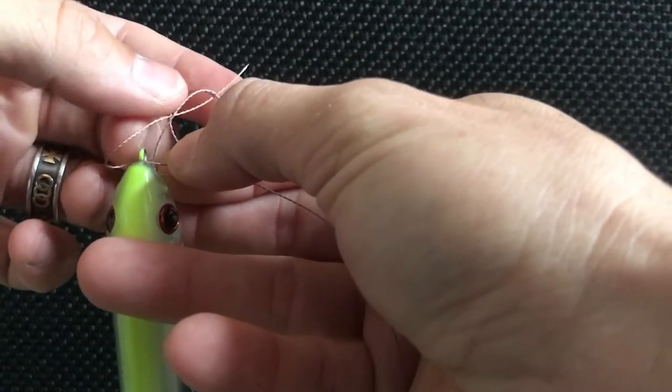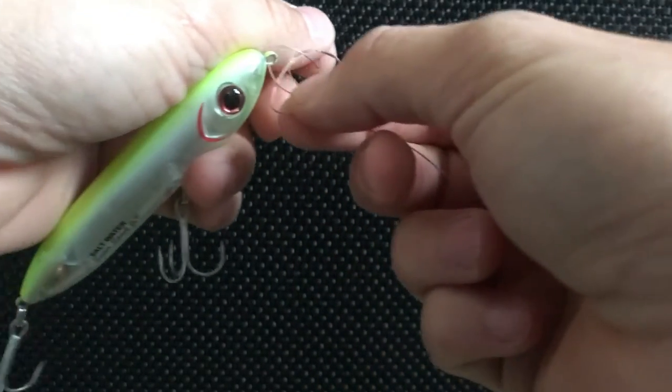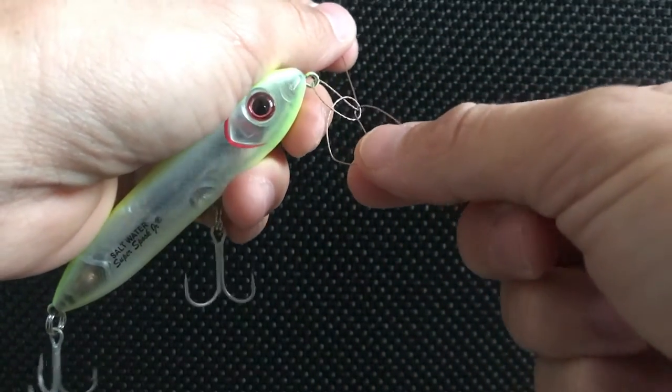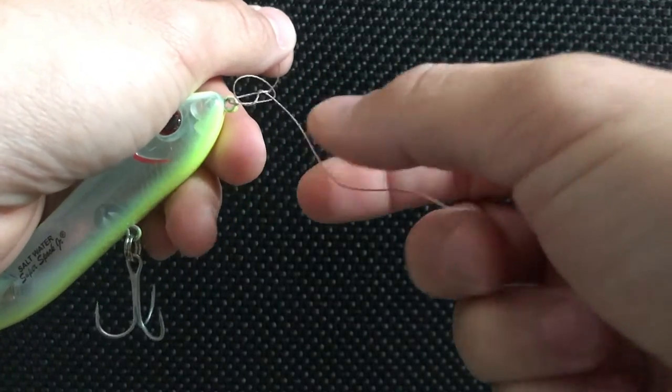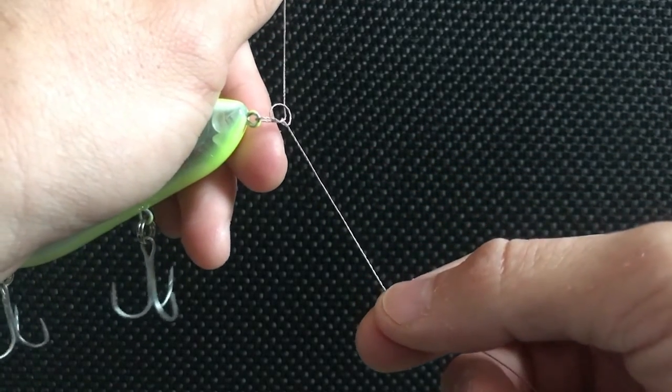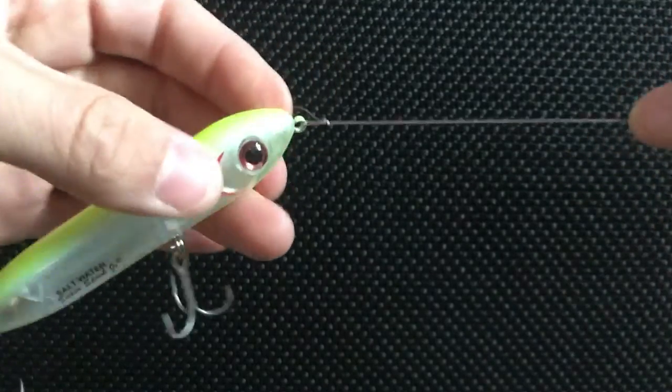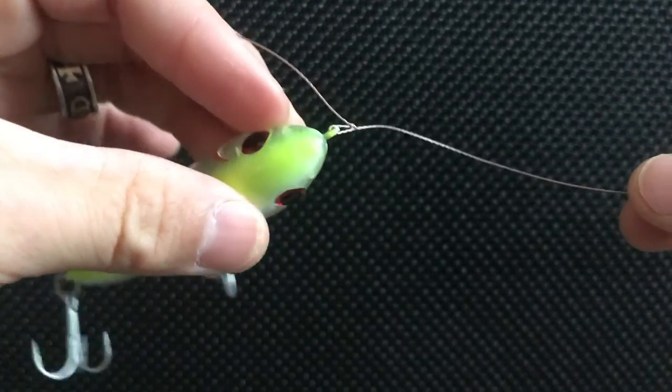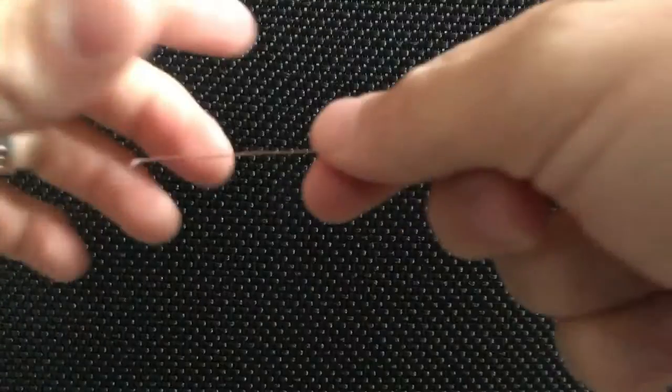Then you pull all that. Depending on how big you want your loop, you can adjust it. Then you pull the running end while you're holding the tag end and it all cinches down and makes a loop knot. There it is, loop knot for your topwaters.